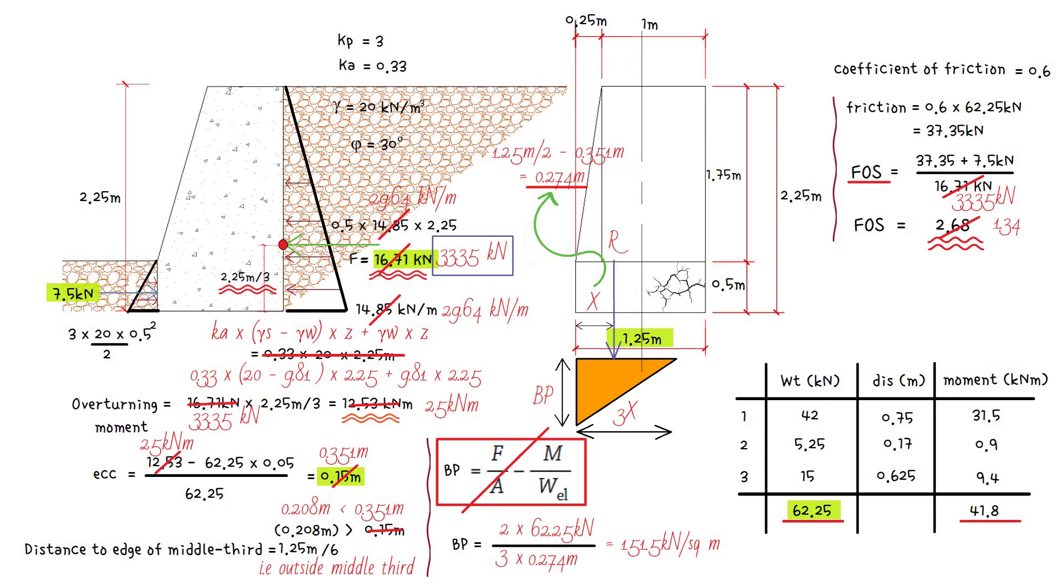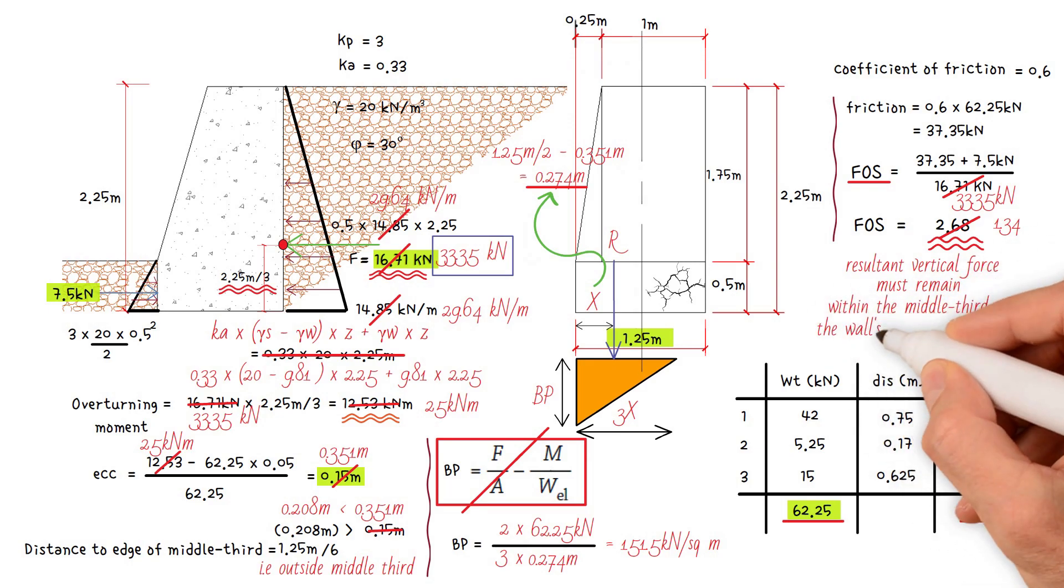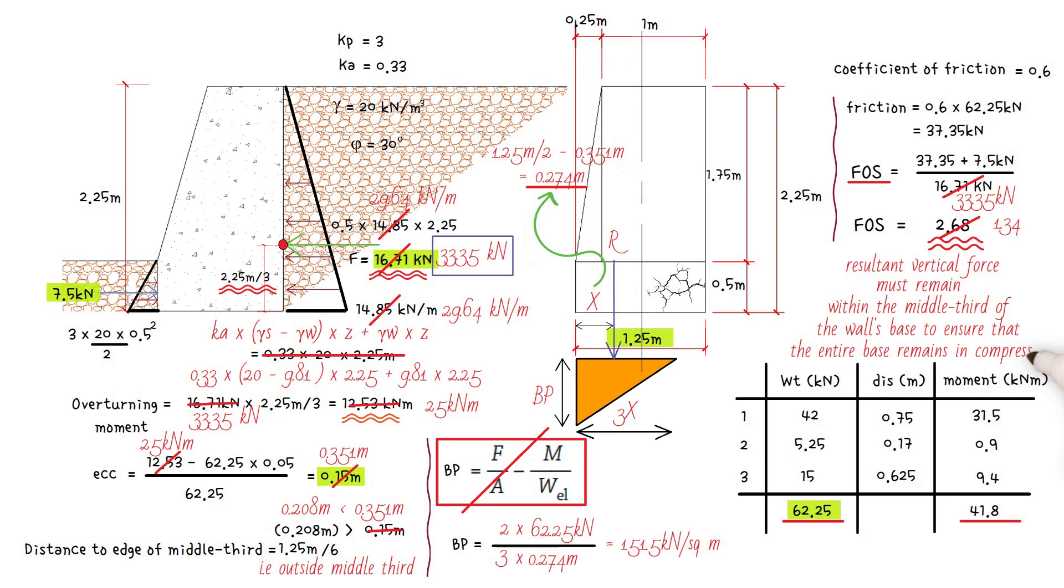Key point summary: remember that the resultant vertical force for gravity retaining walls must remain within the middle third of the wall's base to ensure that the entire base remains in compression.